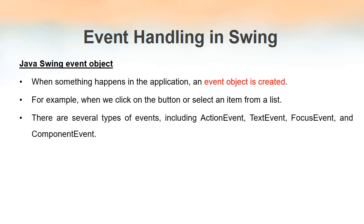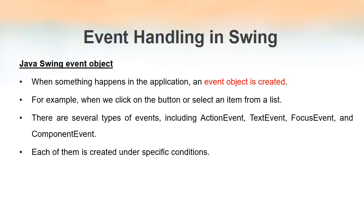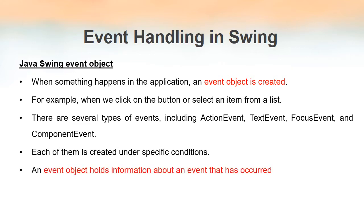All these actions are actually generating an event. There are different types of event classes in Java — we have seen these classes when we discussed event handling using AWT. Some examples of event classes in Java are ActionEvent, TextEvent, FocusEvent, etc. Each of these events will be generated only under specific conditions. When we click on a button, it is the ActionEvent that gets generated, not the TextEvent or FocusEvent. An event object that gets created when an event occurs will contain all the information regarding that event.